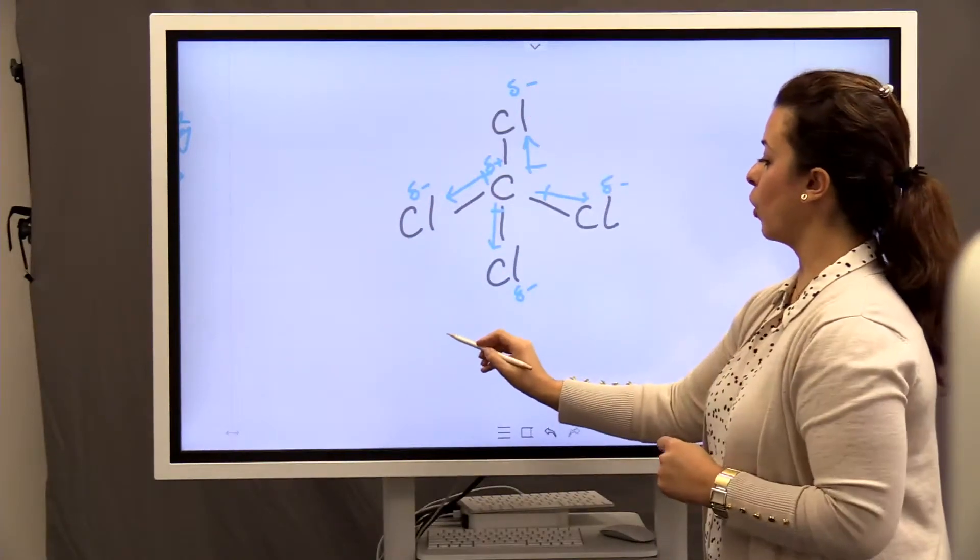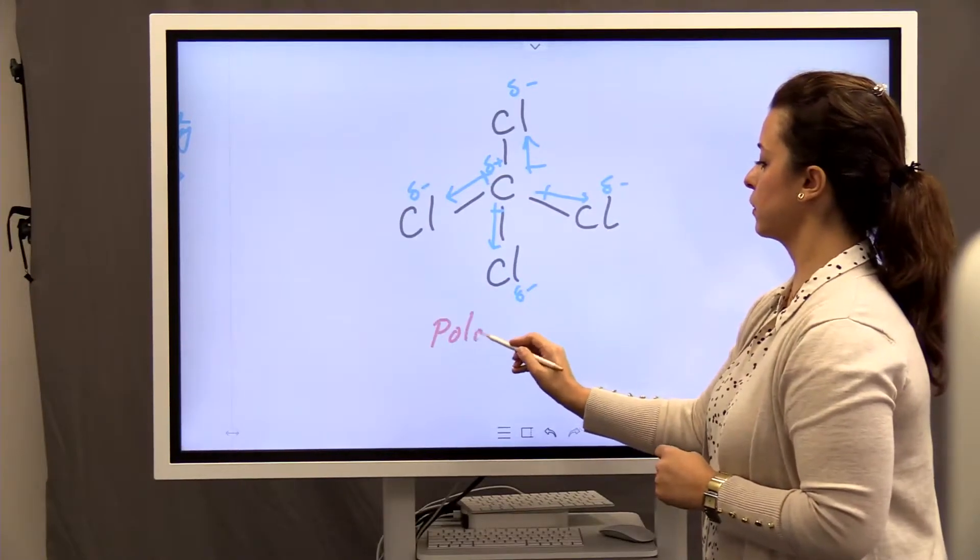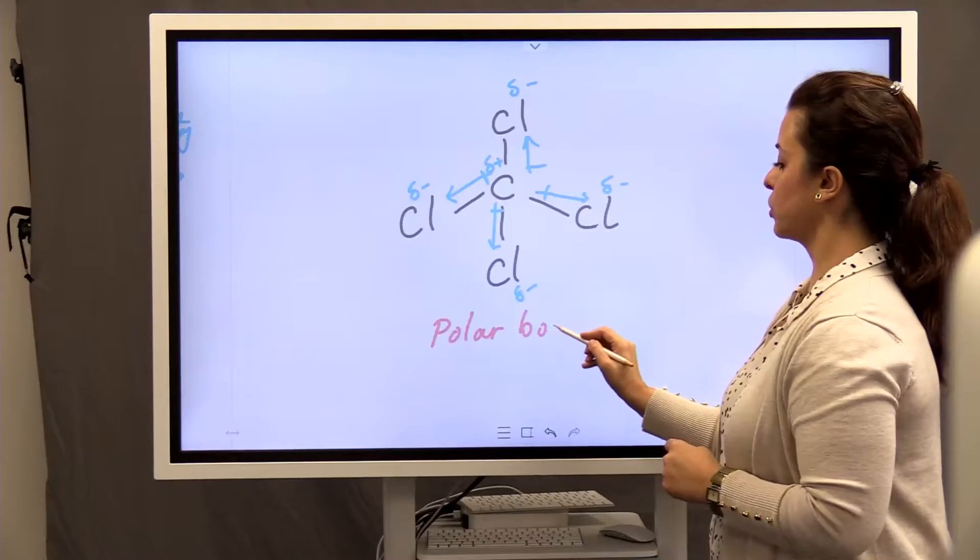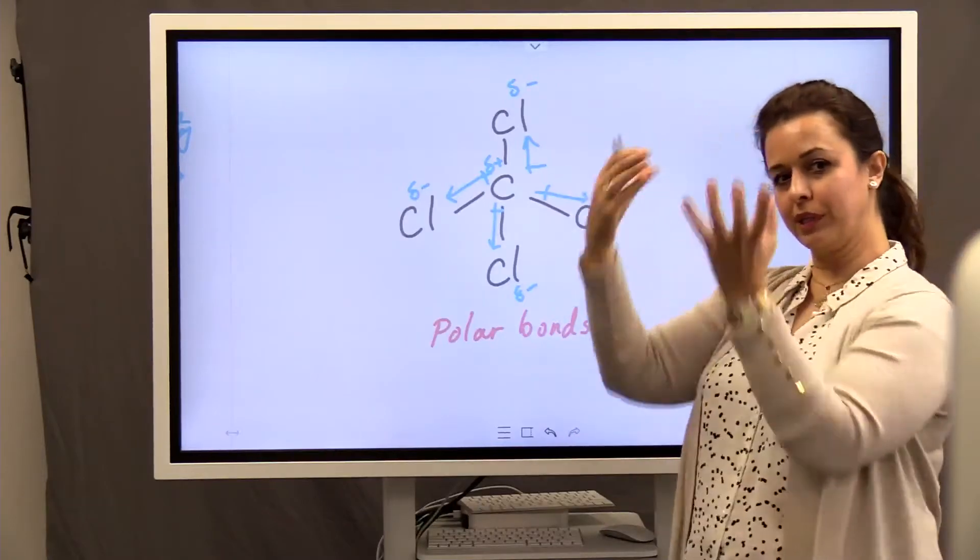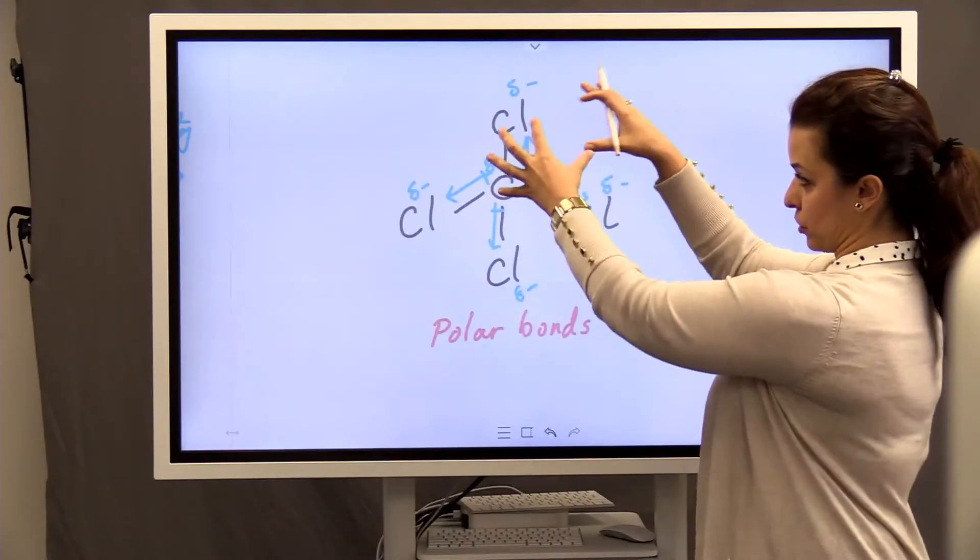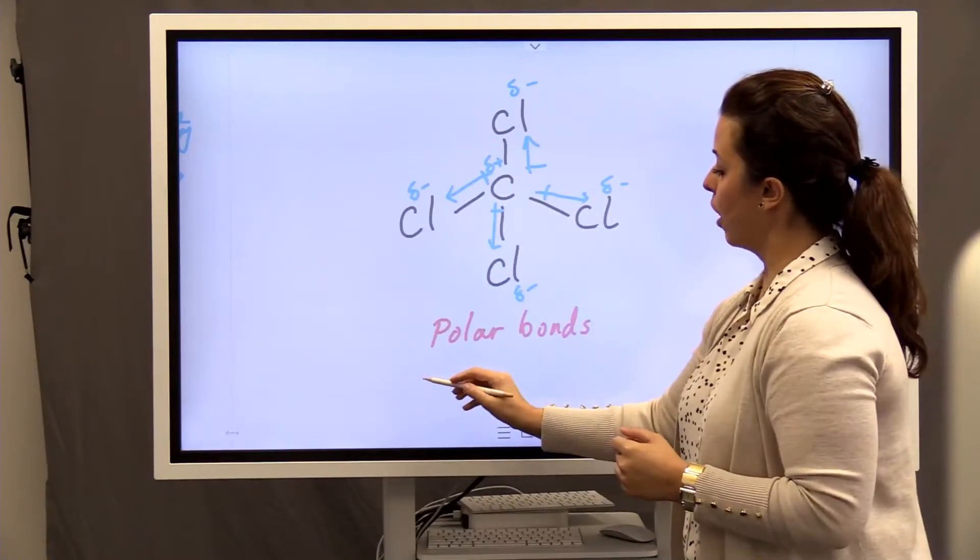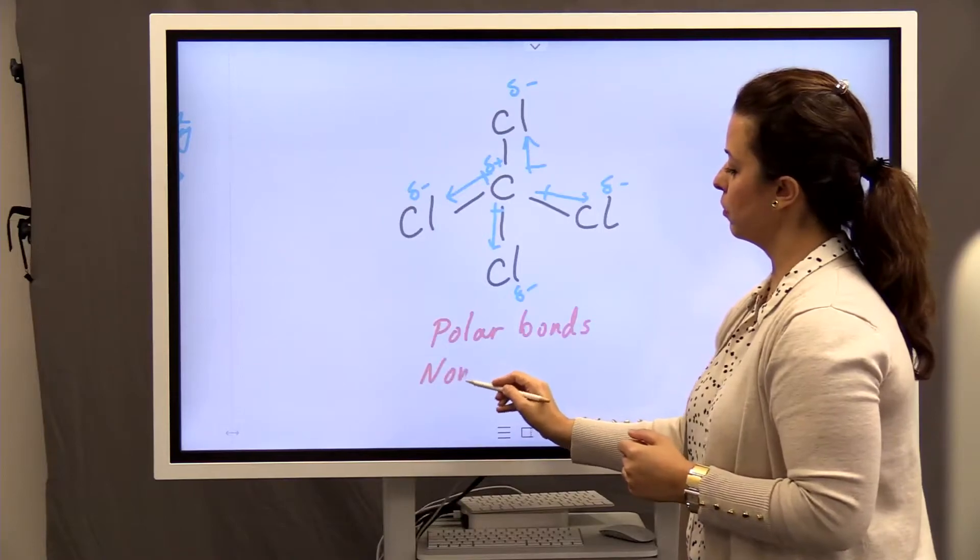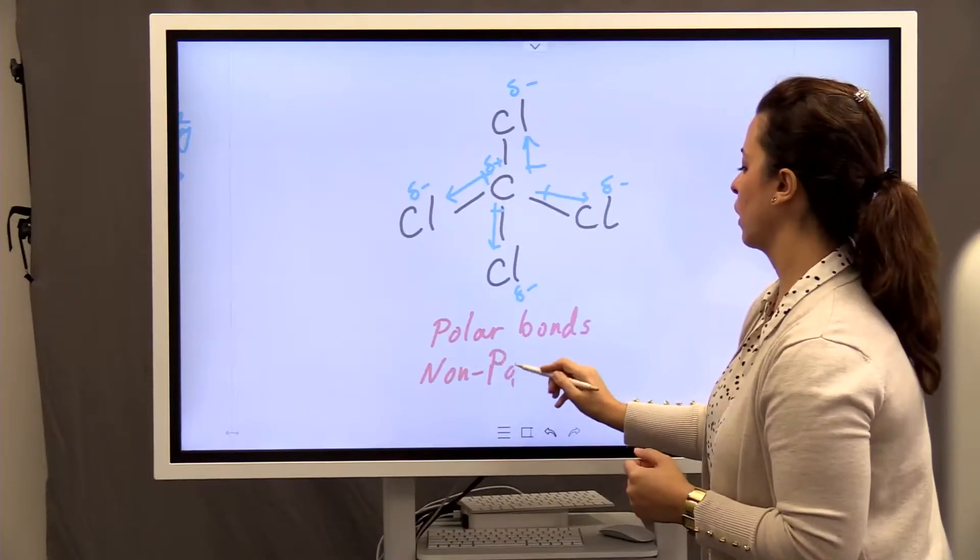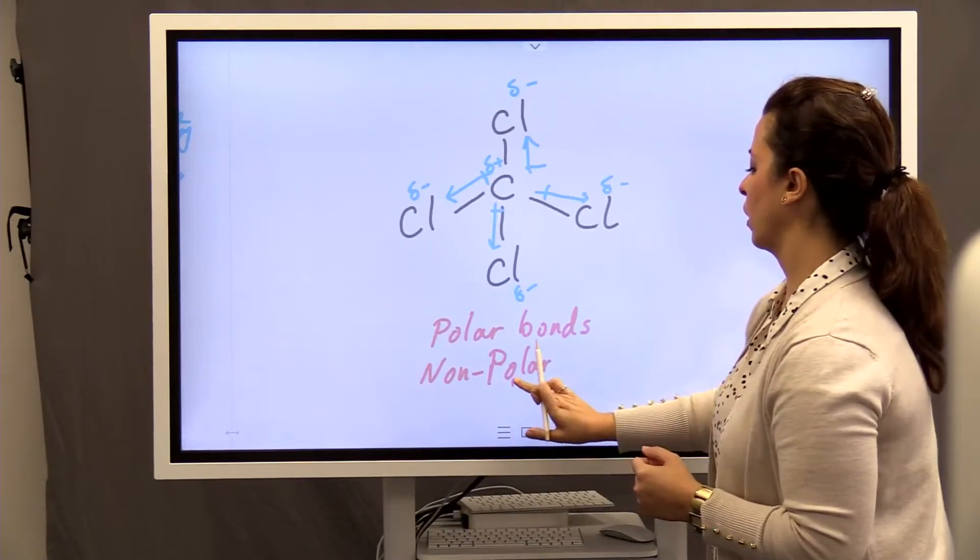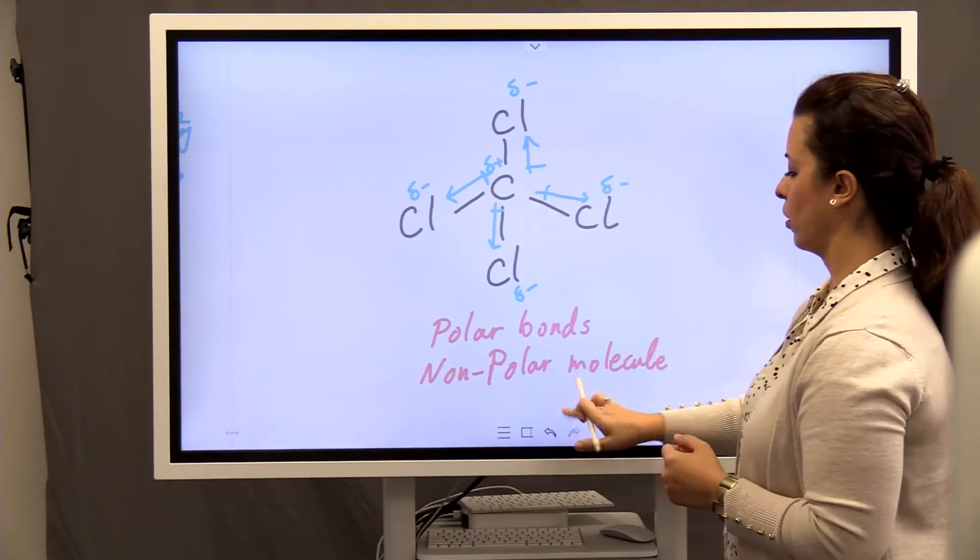These vectors cancel out each other. So bonds are polar, polar bonds, but because we are talking about the overall dipole, you cannot draw an overall dipole because molecule is completely symmetrical and the distribution of electrons is completely symmetrical all over the molecule. So bonds are polar, but molecule is nonpolar molecule. Okay?